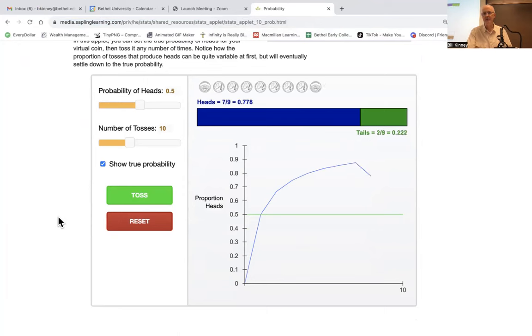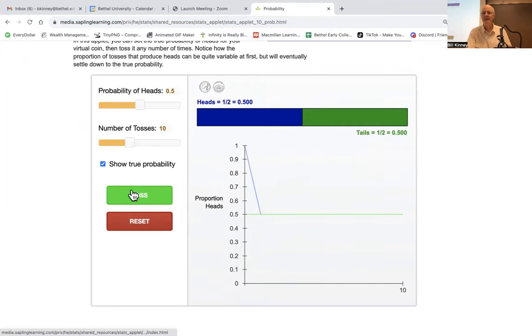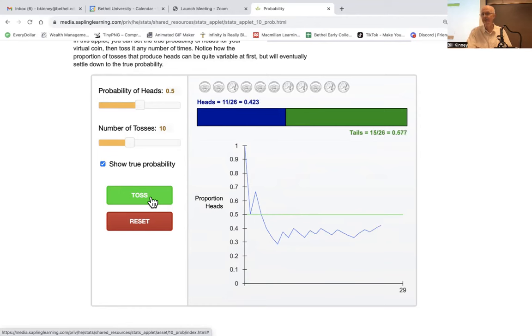You could do some simulations, like on this website. And toss a coin. The probability of heads is set to 0.5 here. And you can keep track of the proportion of heads over time as you keep flipping the coin. That one went up for a while. Lots of heads in a row there. Looks like there were eight heads in a row. And then there was a tail and then there was a head again. I'm going to reset that.